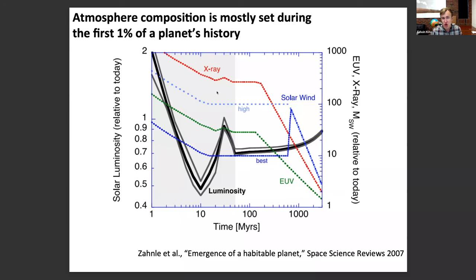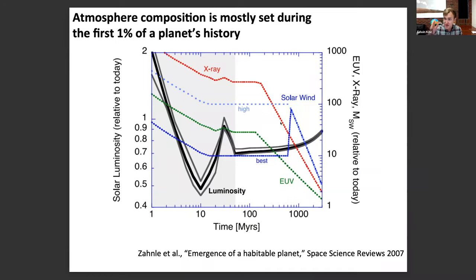This graph summarizes our understanding of a couple of loss drivers. The solar wind, shown by the blue line on a log scale, is much more intense early in a sun-like star's lifetime. The EUV, shown by the green track, is again much more intense early. What these two things do together is strip away the top of the atmosphere — they heat and thus puff up the uppermost atmosphere, making volatiles escape. In the case of solar wind, you can ablate the top of the atmosphere.